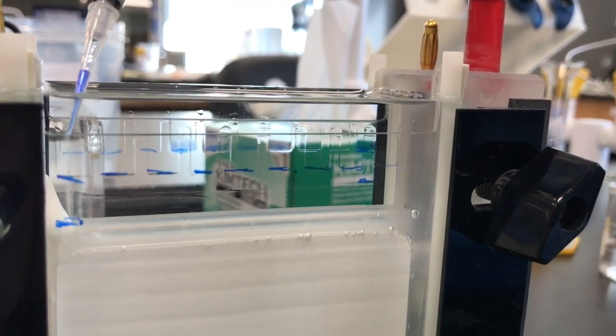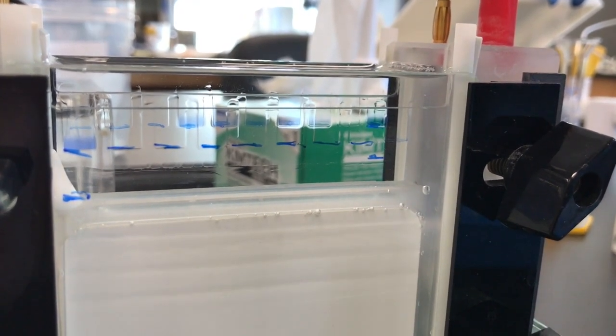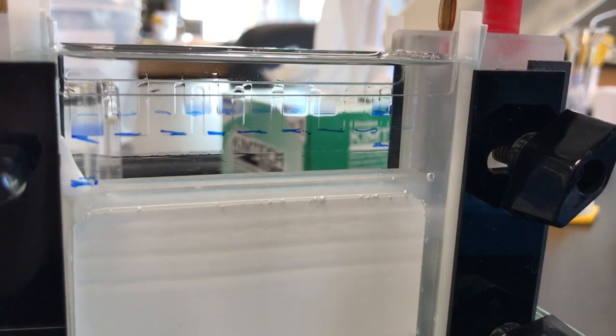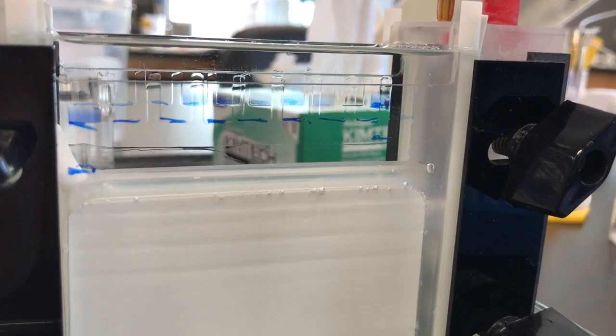Now, to load your samples, using a P10 pipette, you are going to pipette 10 microliters of sample into each well. You want to pipette it slowly so that the sample will naturally just fall down into the well.